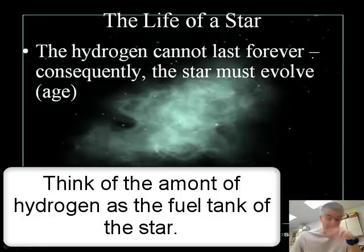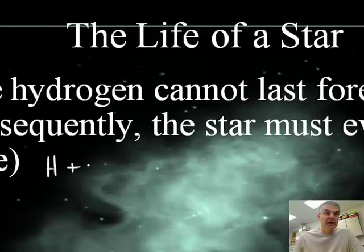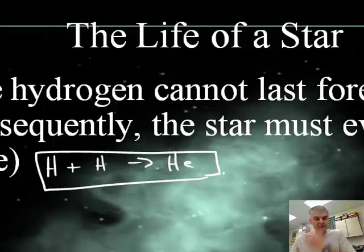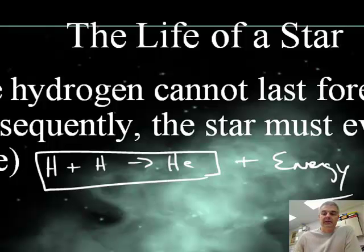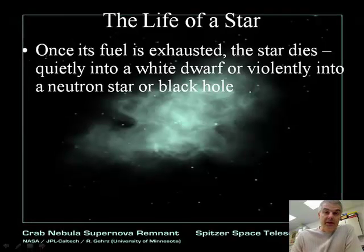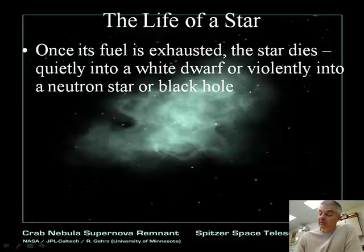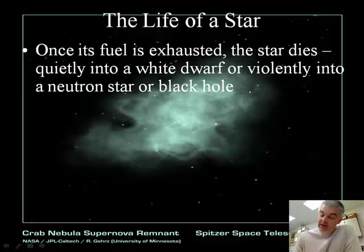There's only so many hydrogen atoms, and as hydrogen fuses into helium — hydrogen plus hydrogen makes helium — this produces huge amounts of energy. But once the fuel is gone, think of it like a gas tank: the star is going to die quietly into a white dwarf in some cases, or possibly violently into a neutron star or a black hole.